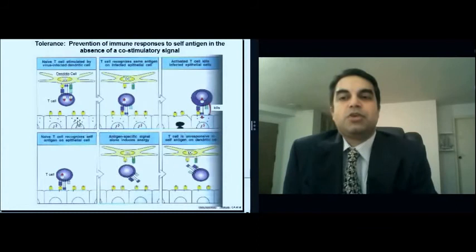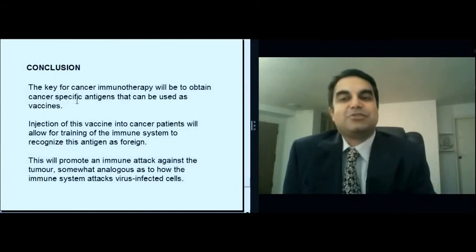So what we want to do is we want to replicate this system of viral infection and train the immune system to recognize a cancer antigen as foreign so that it can then target these cancer cells specifically for destruction without impacting and inducing collateral damage on otherwise normal cells. So that's really the key for cancer immunotherapy. It's to obtain these cancer-specific antigens.